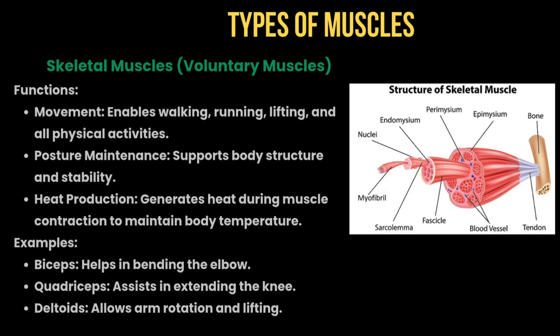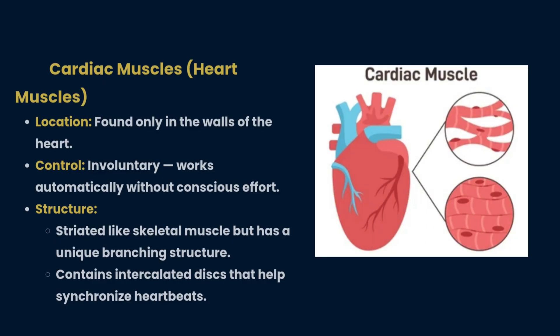Skeletal muscles support body structure and stability, and generate heat during contraction to maintain body temperature. Examples include the biceps, which helps in bending the elbow; quadriceps, which assist in extending the knee; and the deltoid, which allows arm rotation and lifting.